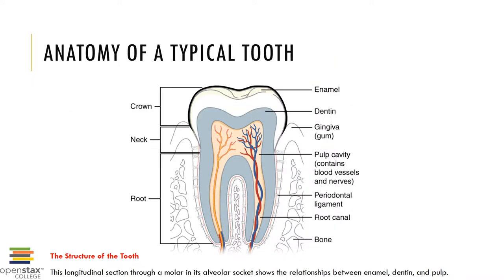A typical tooth structure consists of a crown, which is the exposed part that projects into the oral cavity, covered by enamel over a highly mineralized bone-like material called dentin, with a soft pulp within the pulp cavity. The neck is the narrow area serving as the boundary between the crown and root. The root sits below the gingiva into sockets of the jawbone called alveoli, forming gomphosis joints, covered by cementum and anchored by the periodontal ligament. The root holds the pulp cavity extending down into the root canal and apical foramen.